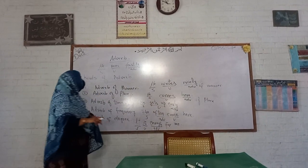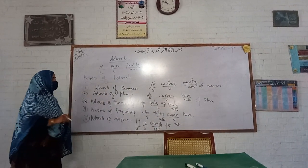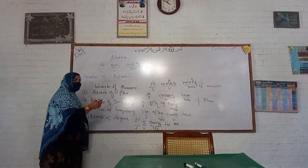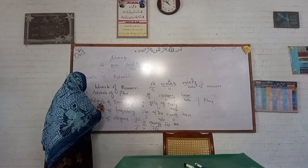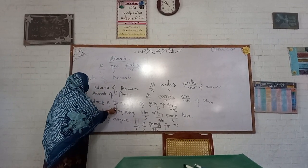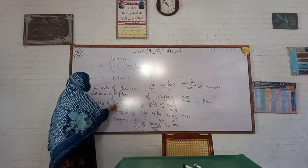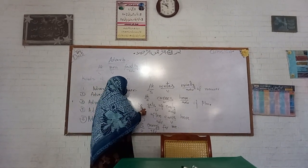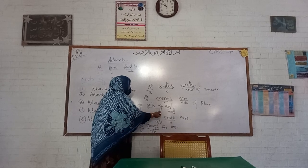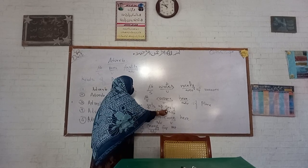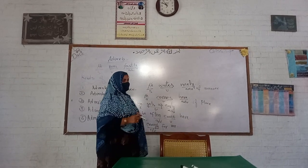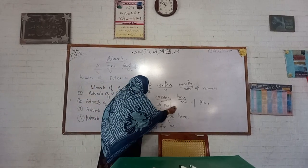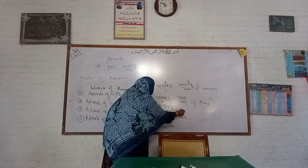Now let's discuss adverb of time. Words like 'early,' 'now,' and 'then' indicate time. For example, 'He gets up early' — 'he' is the subject, 'gets up' is the verb, and 'early' is the adverb of time. So 'early' here is performing the role of adverb of time.